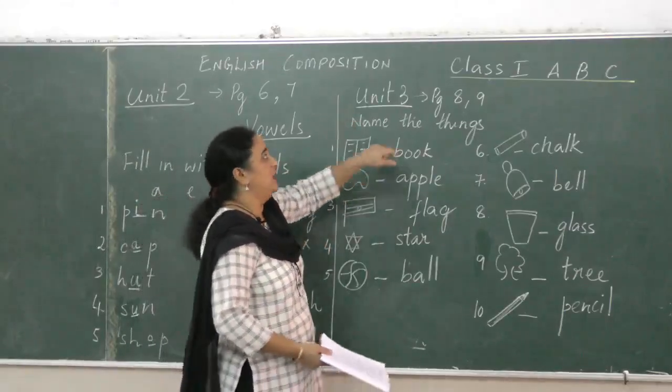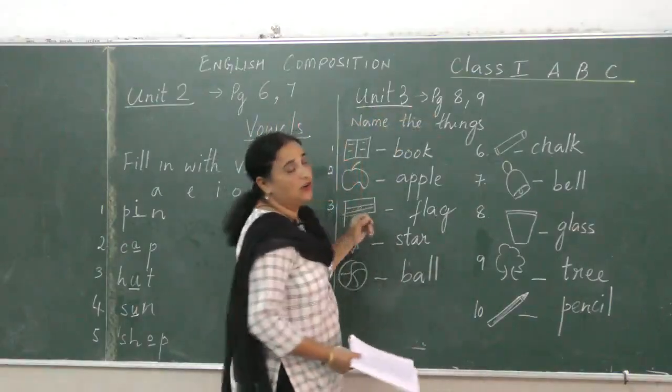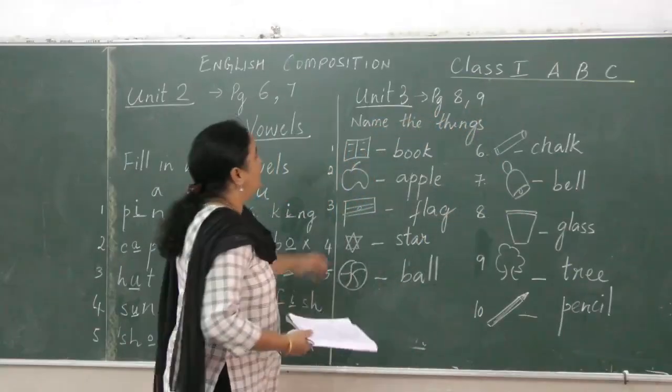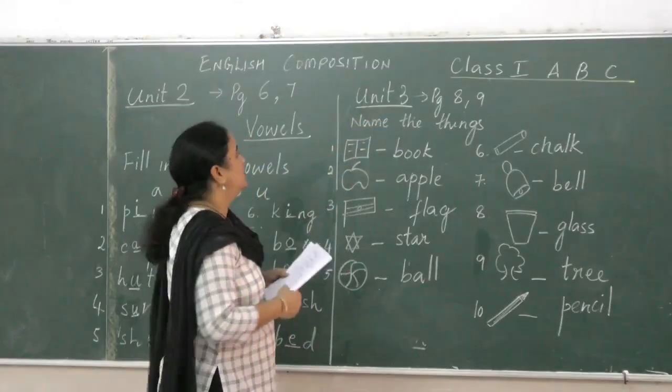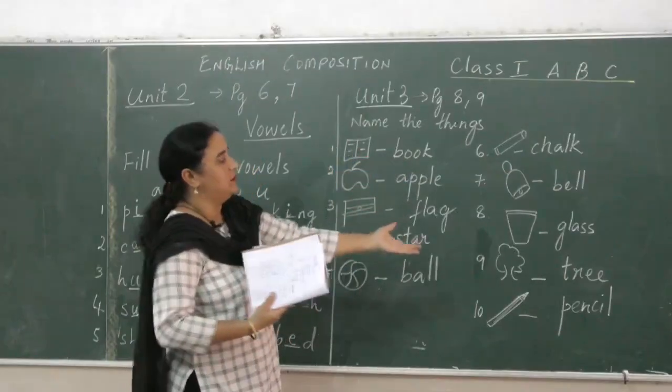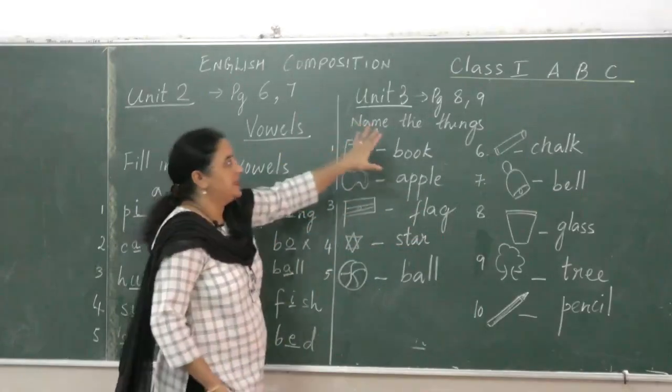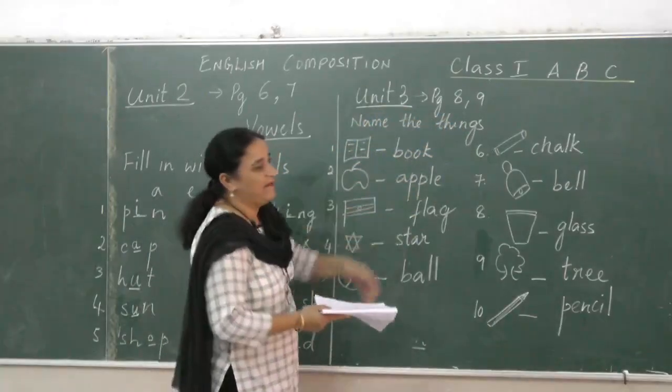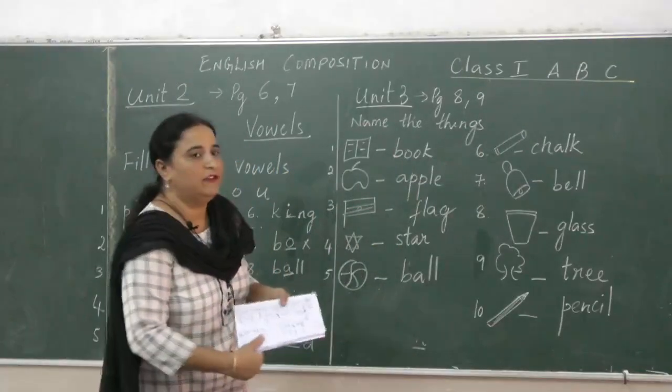Now once you finish with the vowels, you take a fresh page again and then you will write Unit 3. I am doing Unit 1, Unit 2, and Unit 3. So this is Unit 3, this is on page number 8 and 9. Now Unit 3 says you have to write few words. You have to see the picture and write the word. So I have given you 10 pictures over here with the words. You have to do this in your copy. You take a fresh page again once you finish the vowels. From the book, I have not taken anything out of the book, everything is within the book.